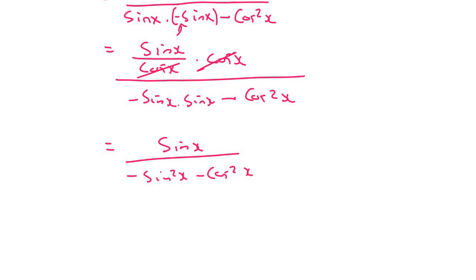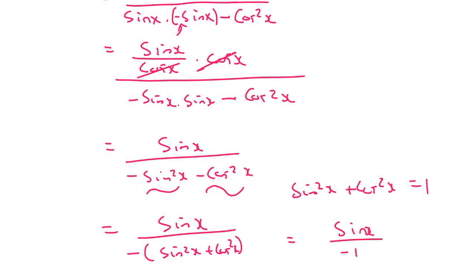But what you should almost start to realize is that this is almost an identity of ours. So what we can do is take out a negative as a common factor, and you're going to be left with sin squared x plus cos squared x. Now sin squared x plus cos squared x is one, and so we're going to end up with sin x over negative one, which is the same as negative sin x.